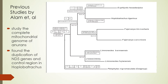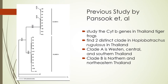In this slide are the previous studies. Alam et al. studied the complete mitochondrial genome of ranids from different genera such as Euphlyctis, Hoplobatrachus, Sphaerotheca, and Limnonectes, using Pelophylax as the outgroup. They found duplication of the ND5 gene and the control region in Hoplobatrachus tigerinus. Panso et al. studied the cytB gene in the Thailand type of frog, specifically the Hoplobatrachus tigerinus in Thailand, and found two distinct clades: Clade A from western, central, and southern Thailand, and Clade B from northern and northeastern Thailand.